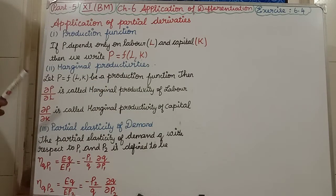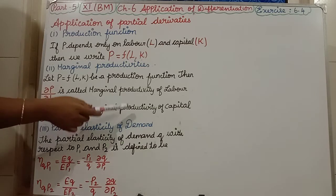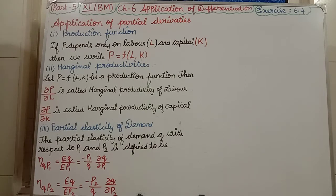Next one. ∂P/∂K. K means what I told - capital. So we are differentiating P with respect to capital. ∂P/∂K is called marginal productivity of capital.